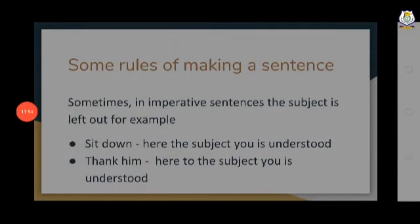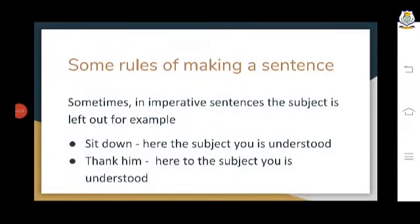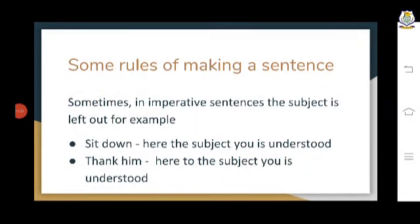When we make a sentence, we name some person or thing, or we say something about that person or thing. In a sentence, we are always talking about some person or thing. The person or thing about which we are talking is called the subject, and whatever we say about that person or thing is called the predicate.